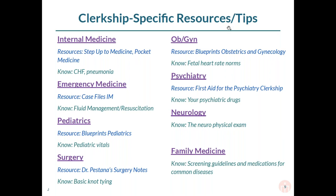Moving on to the sub-specialties: OB-GYN is going to be difficult because it's a world of its own. Fetal heart rate tracings are going to be huge — they tell you what's going on with the mother and baby. A resource to use for that is Blueprints OB-GYN. For psychiatry, First Aid for the Psych Clerkship is the gold standard — it's the only book I used and it was more than enough to do well on the shelf. It has all the drugs and diseases. If you know all the diagnostic criteria and the side effects of drugs, and when to give each one — for depression, for schizophrenia — you'll be golden for the shelf exam.